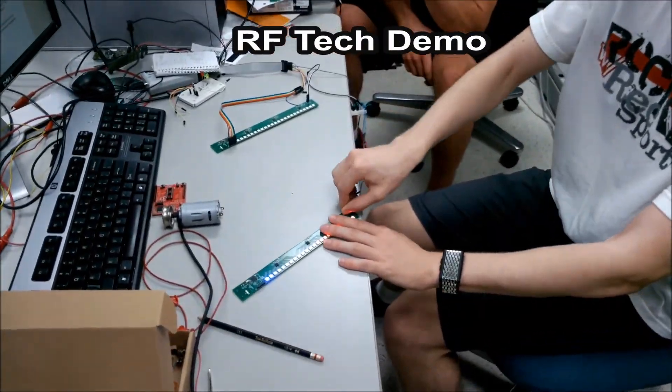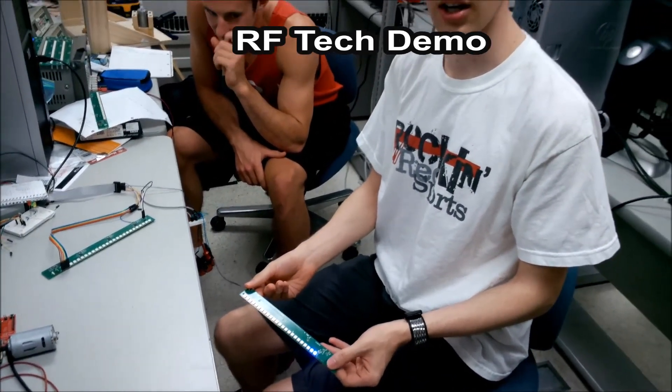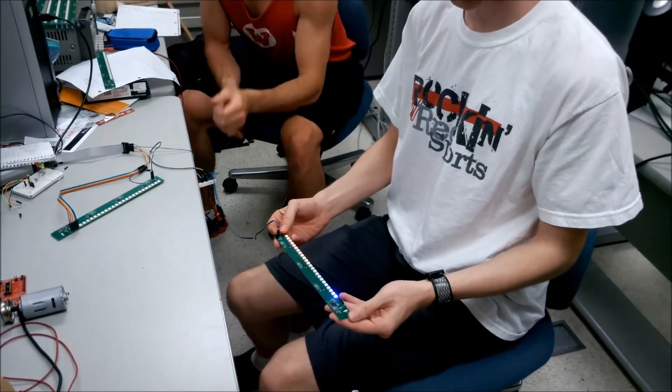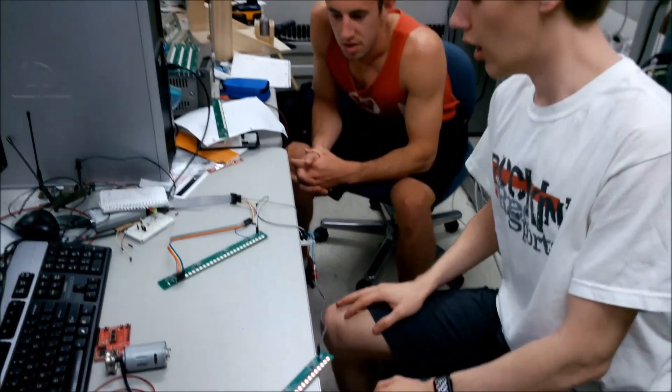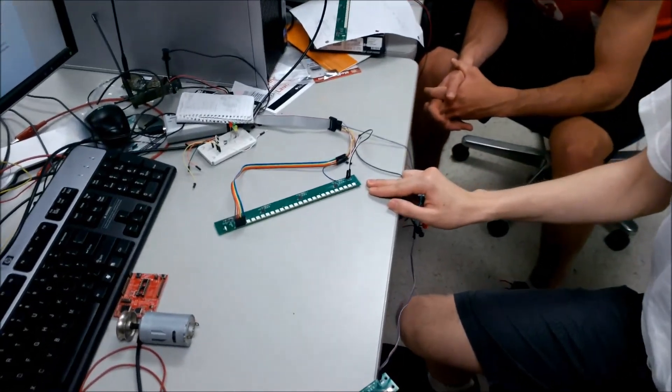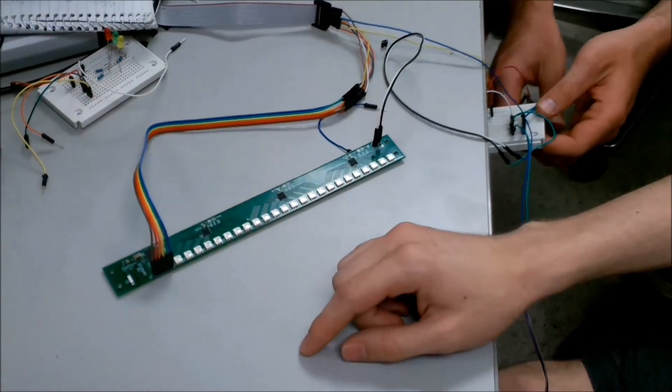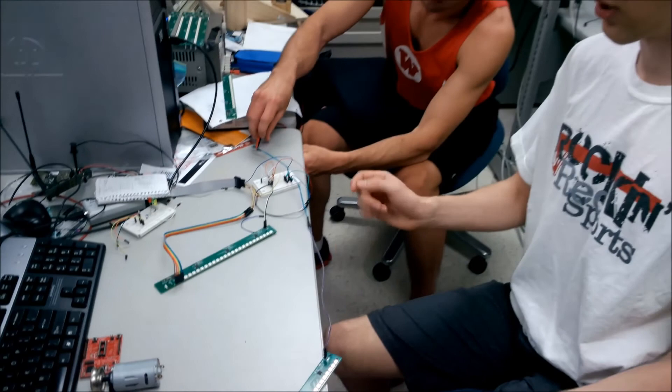In order to display different images on the device without running special cables through the axle, we designed our PCB around the TI-CC430 microprocessor, which contains an integrated RF transceiver module. This gives us the capability to configure the panels to receive packets of information wirelessly, which encode changes to the colors and patterns that are then displayed.